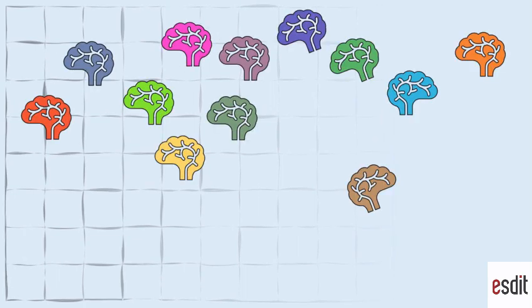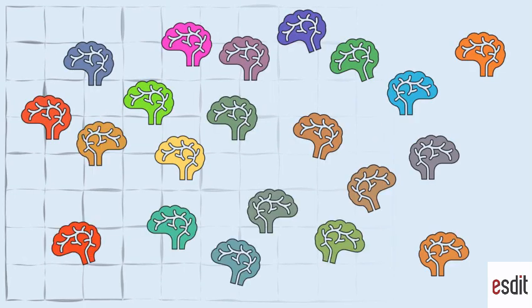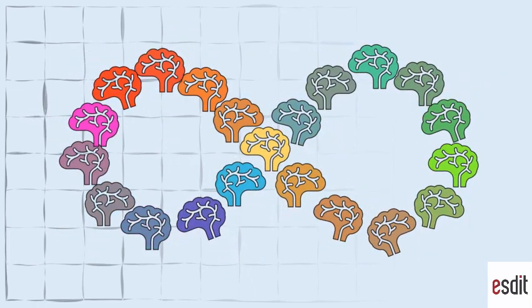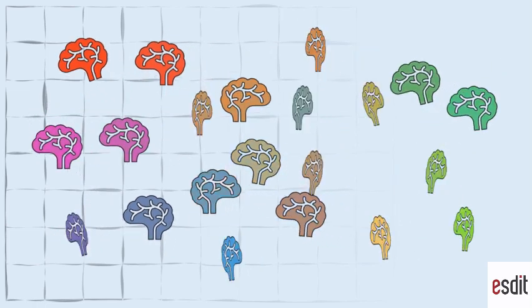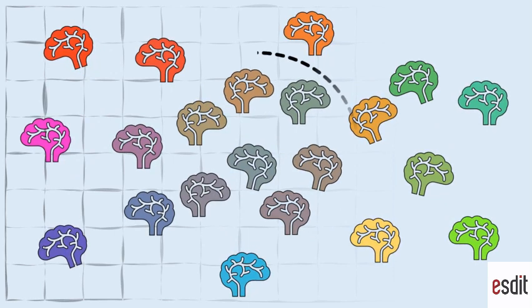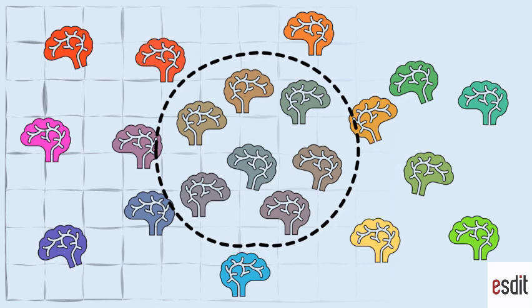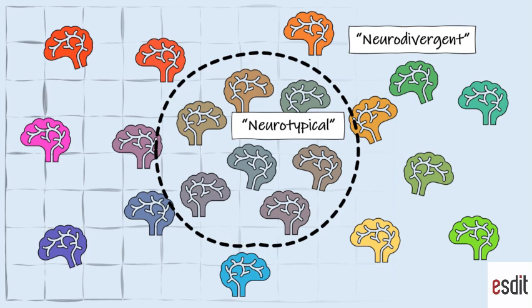If we consider the wide variety that exists in how a human brain can work, which is called neurodiversity. Of course, every brain is unique, but there is a range of what we, as a society, considered to be normal, which is referred to as neurotypical, and those outside that range are considered neurodivergent.